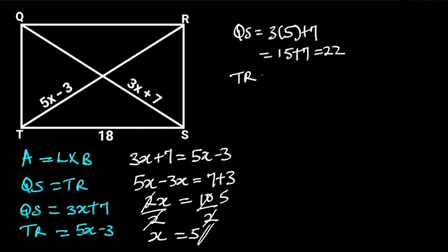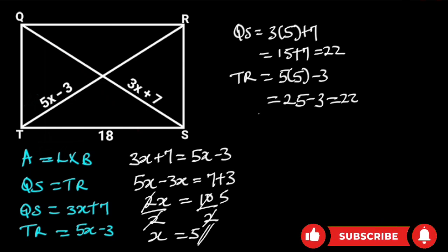If we do the same to TR, we will have 5 times 5 minus 3, which is equal to 25 minus 3, which is 22. Hence, the diagonal of the rectangle is 22.